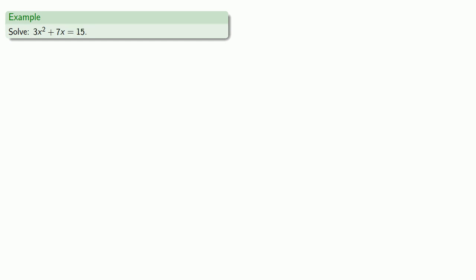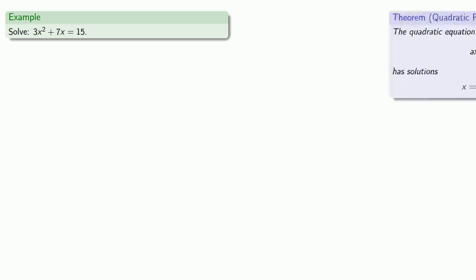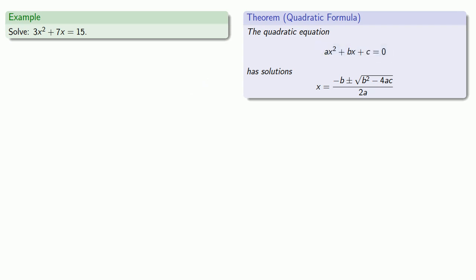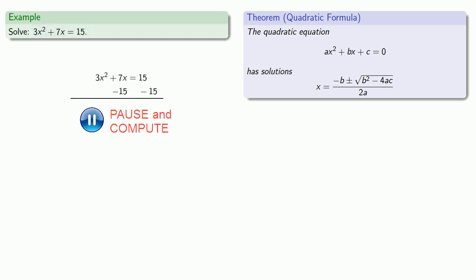For example, let's take the equation 3x squared plus 7x equals 15. This is a perfectly good equation that could be solved by completing the square, but let's use the quadratic formula. The important first step is to read all the fine print: the formula applies to an equation equal to zero, but this equation equals 15. So we subtract 15 from both sides to get it into standard form. Now a, b, and c are the coefficients: a equals 3, b equals 7, c equals negative 15.